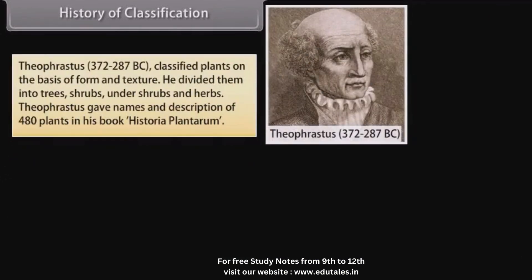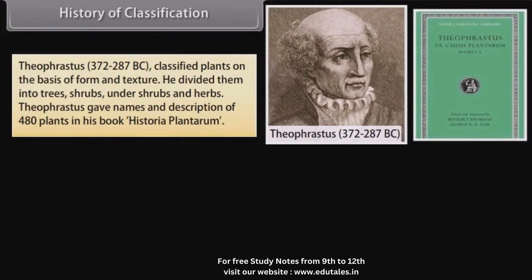Theophrastus (372 to 287 BC) classified plants on the basis of form and texture. He divided them into trees, shrubs, undershrubs, and herbs. Theophrastus gave names and descriptions of 480 plants in his book Historia Plantarum.